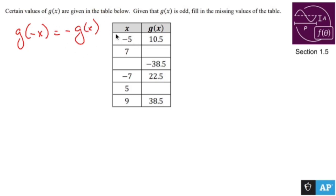Well that means if I were to take negative 5 and make that its opposite, I'm going to get the opposite of this. So g of negative negative 5, which is g of positive 5, is going to be negative g of x or negative 10.5.